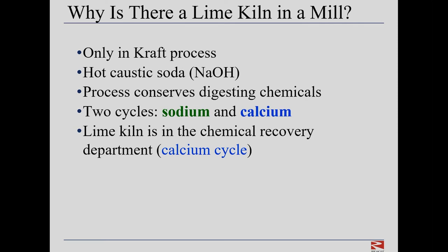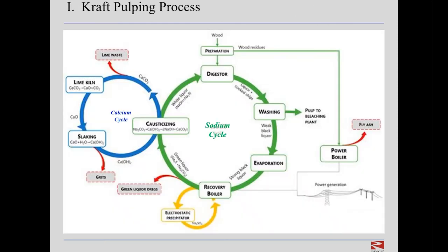This graphic shows the kraft pulping process. The sodium loop or cycle is pictured in the center in green, and the calcium cycle is in blue on the left. We will look at both cycle processes and get an understanding of how pulp — raw material for paper making — is derived from wood. It is essential to note that these two cycles are wet or aqueous chemical processes.